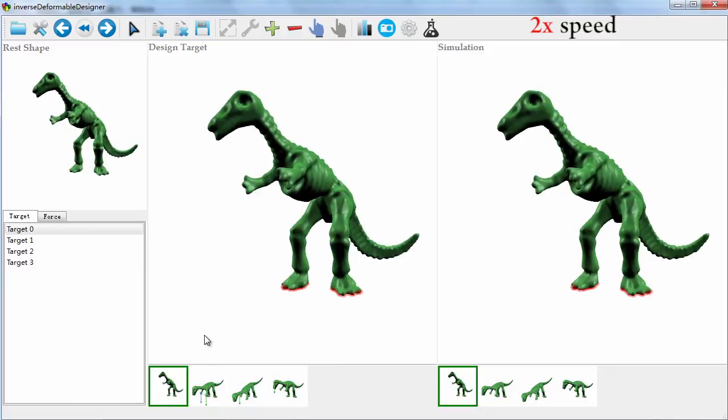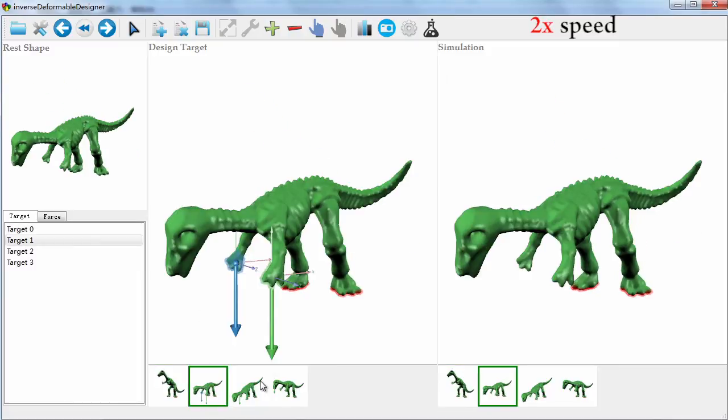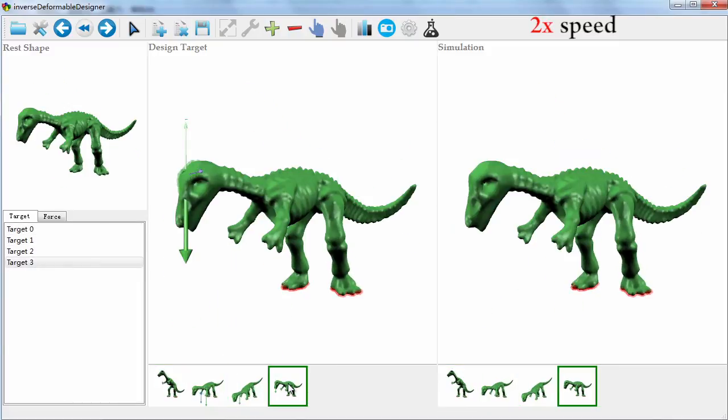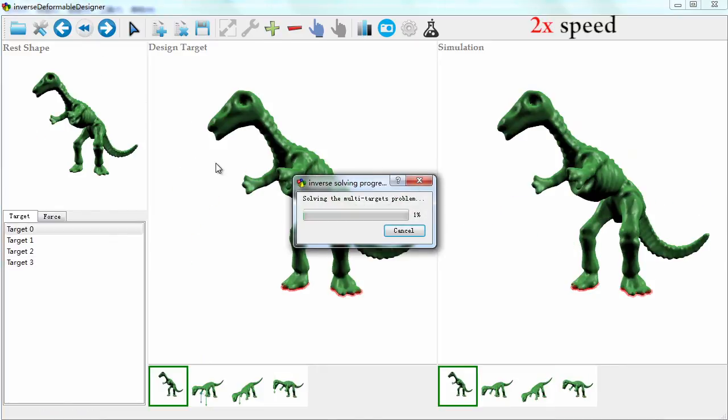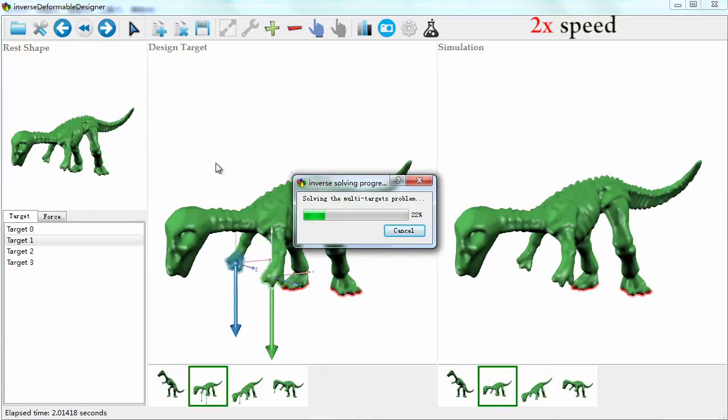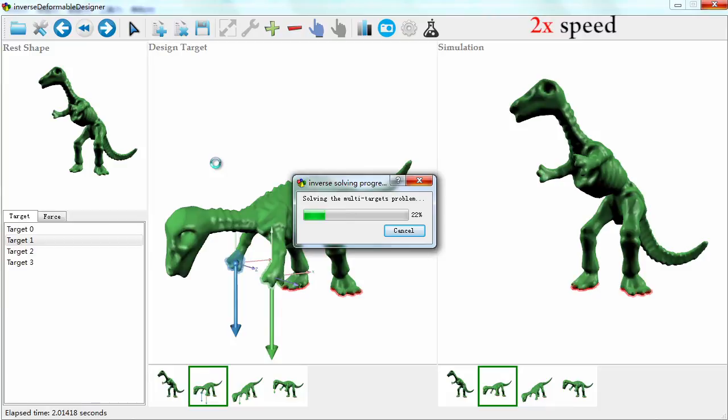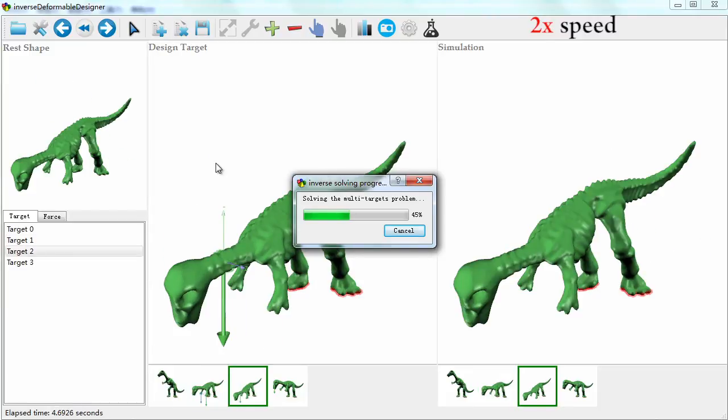The user can also specify multiple target shapes of an object together with the external forces needed. Our method solves a rest shape for each target individually, then finds a single approximated shape by subspace projection.